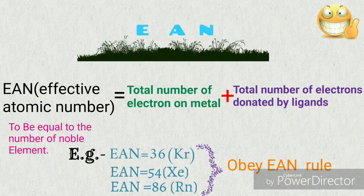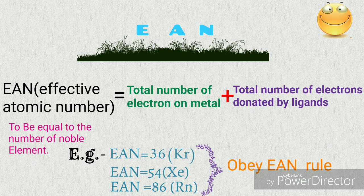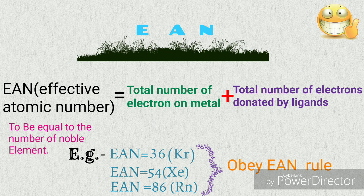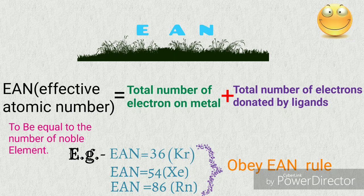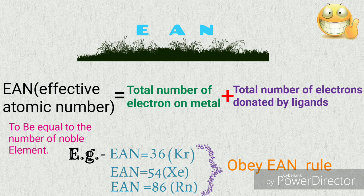Now take a look at EAN, that is effective atomic number. In a coordination compound, the sum of the electrons on metals and the sum of the electrons donated by the ligands is called effective atomic number or EAN. If EAN is equal to the number of electrons on a noble element, then we will say that the compound obeys EAN rule.